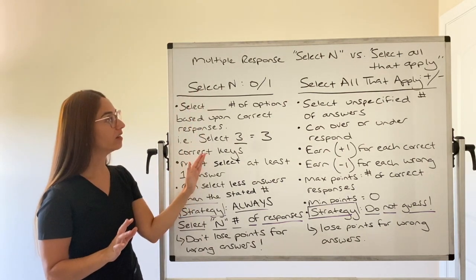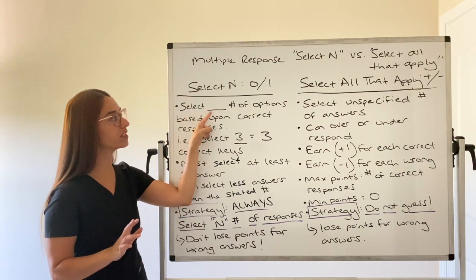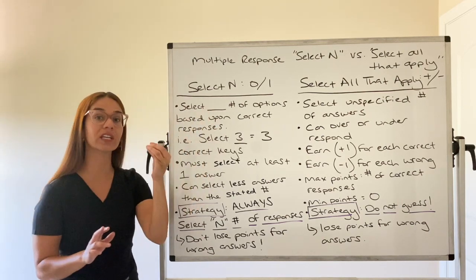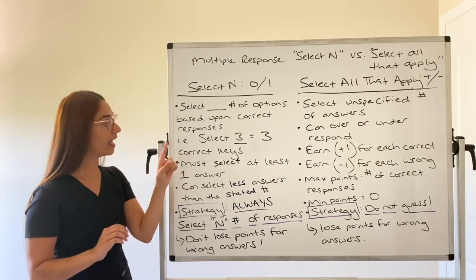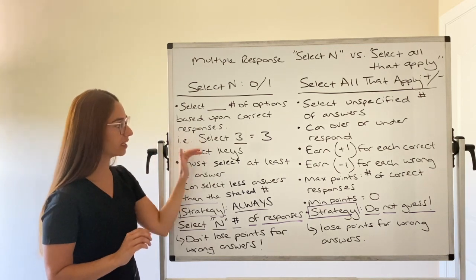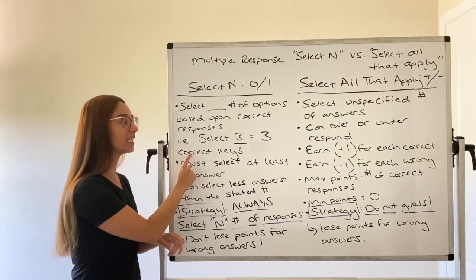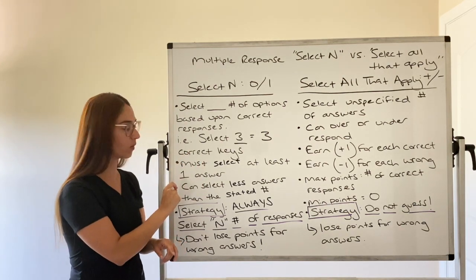Select N. Remember, you select, for instance, the best three or the best four. It will give you a specific number of answers to select. And this is your example. Select three. And that means there is only three correct answers in that question.